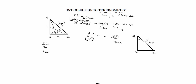I will take angle theta here. We will see sin A, cos A, and tan A. For sin A, the angle opposite side is 'opposite', and the remaining side is 'adjacent'. So sin A equals opposite by hypotenuse, which equals BC by AC. Cos A is adjacent by hypotenuse, which equals AB by AC.